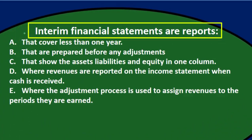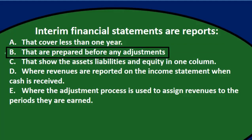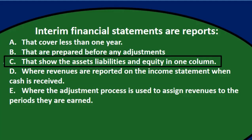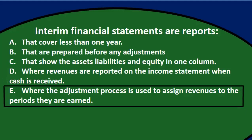Next question: interim financial statements are reports — A. That cover less than one year, B. That are prepared before any adjustments, C. That show the assets, liabilities, and equity in one column, D. Where revenues are reported on the income statement when cash is received, E. Where the adjustment process is used to assign revenues to the periods they are earned.